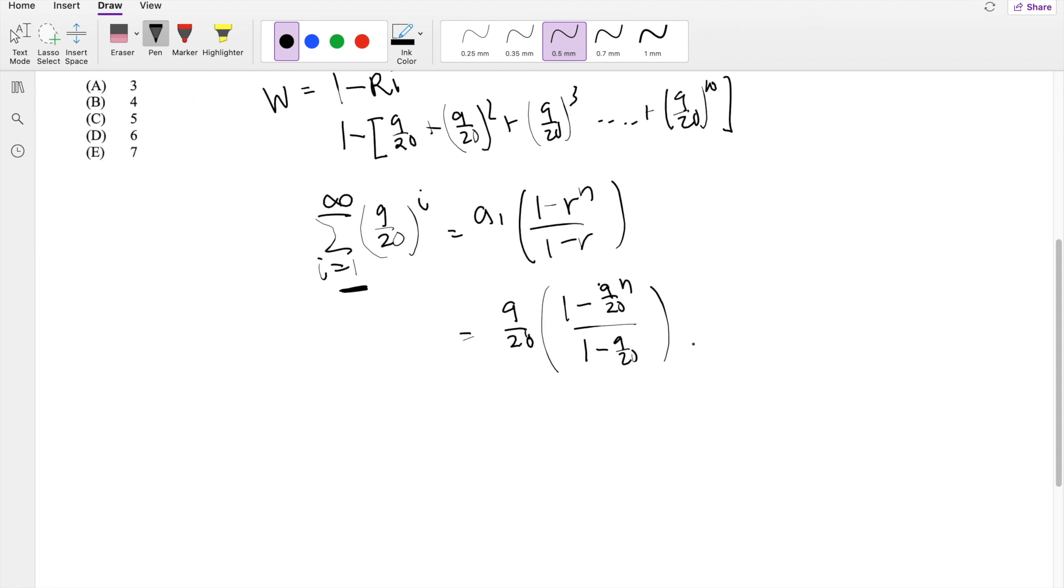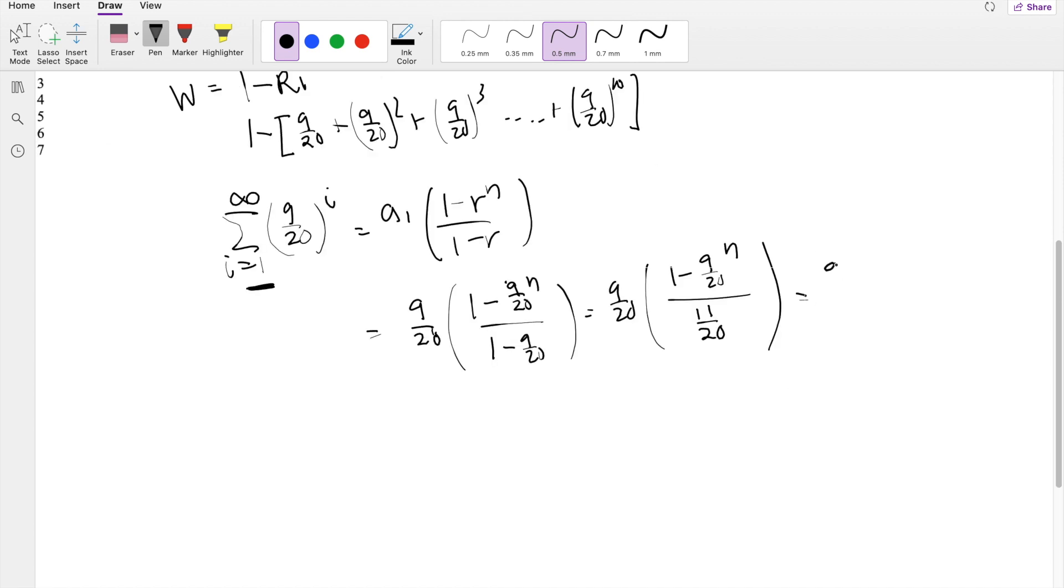This equals 9 over 20 outside, 1 minus 9 over 20 to the N over 1 minus 9 over 20, that's 11 over 20. This equals 9 over 11 times 1 minus 9 over 20 to the N.